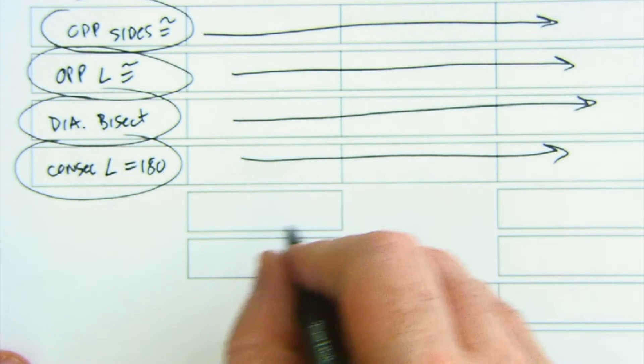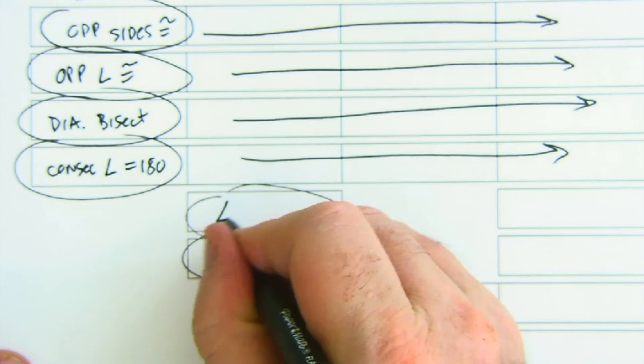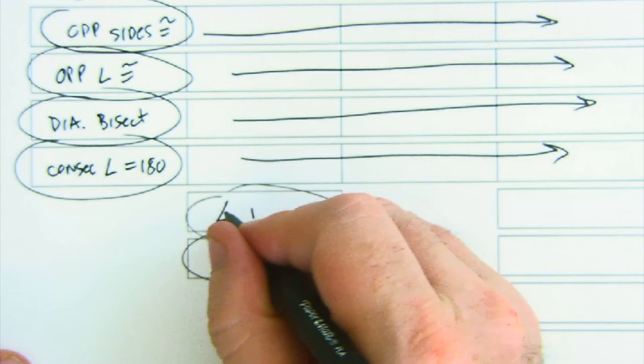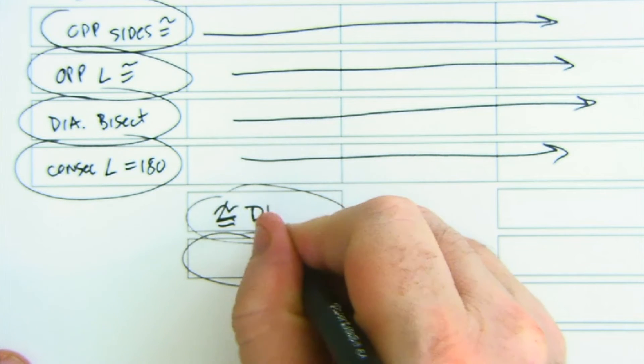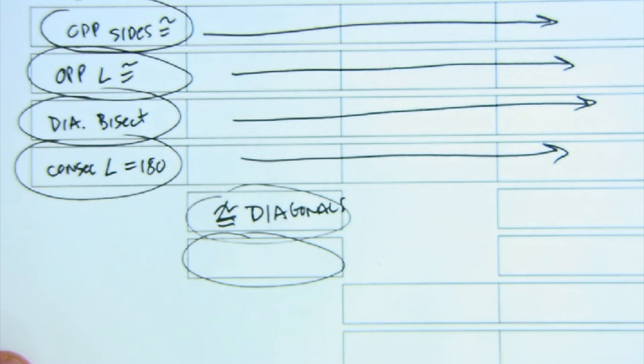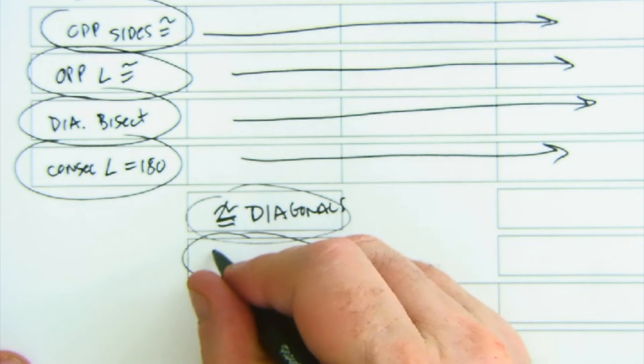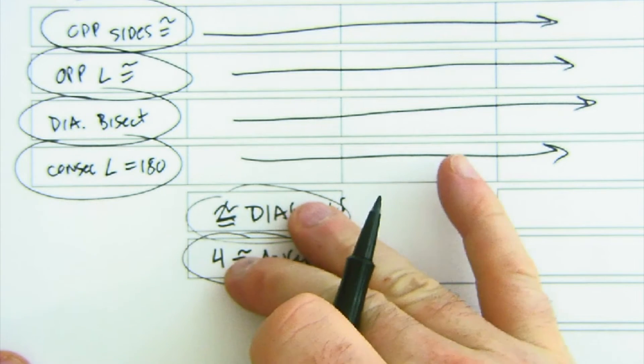A rectangle has congruent diagonals. It's also true just by definition that it's four congruent angles, right? So this is true here, and we notice that it appears again in the square.